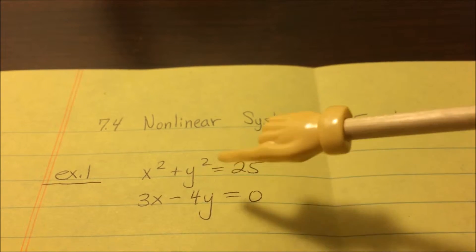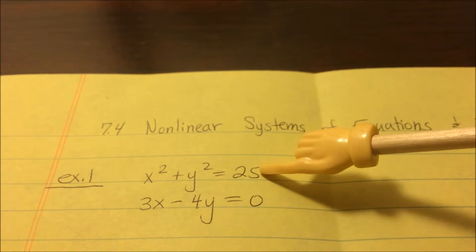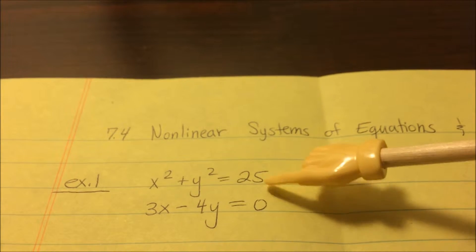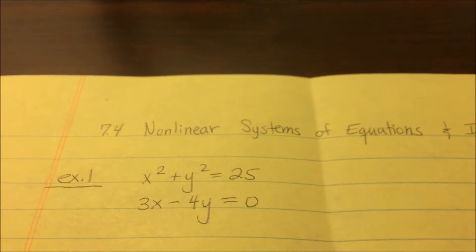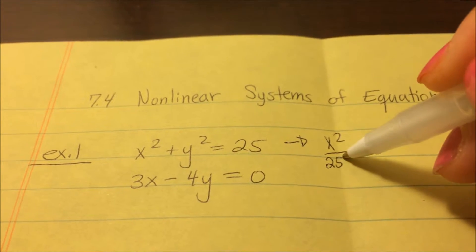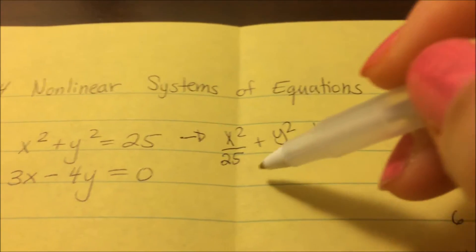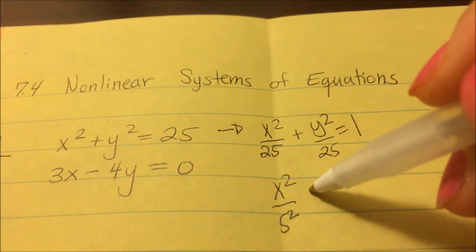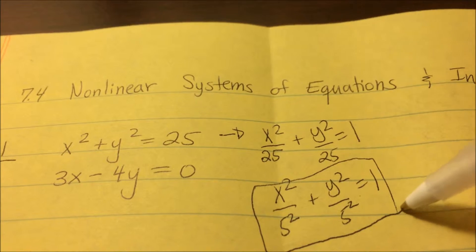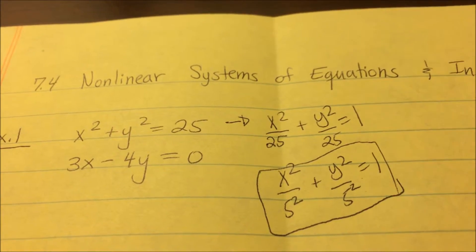Let's graph this out first so you can see how many solutions there are. For x squared plus y squared equals 25, this looks like a circle or ellipse. We can bring the 25 over and divide: x squared over 25 plus y squared over 25 equals 1, which gives x squared over 5 squared plus y squared over 5 squared equals 1. Since the denominators are exactly the same, it's definitely a circle.